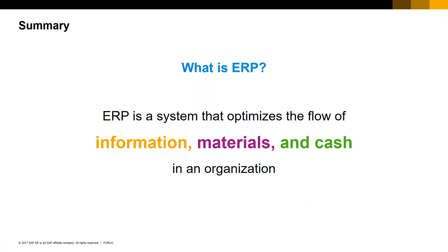In summary, the next time someone asks you what is ERP, you can draw it out for them on one single page and give them one simple answer: ERP is a system that optimizes the flow of information, materials, and cash in an organization. Thanks very much for watching. This concludes Lesson 1.